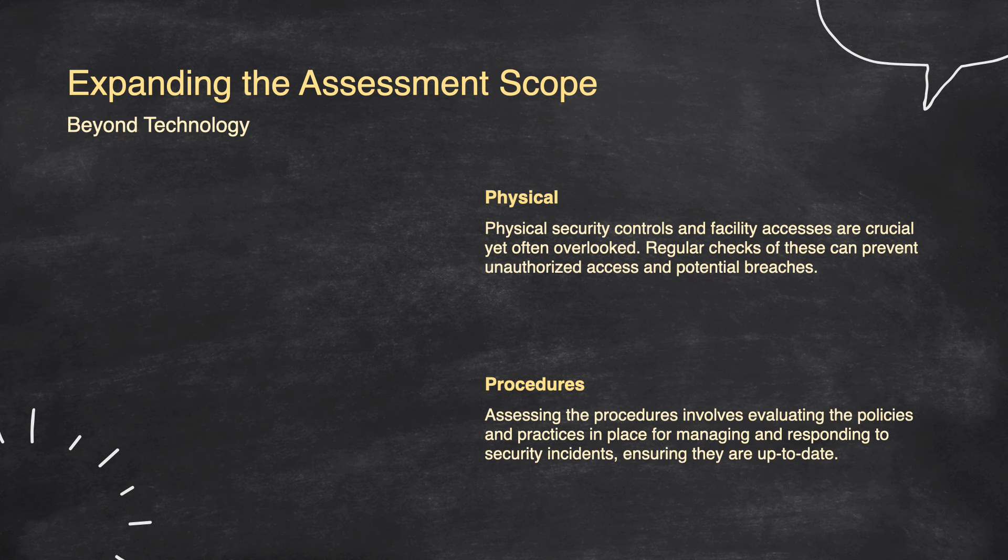Evaluating procedures means looking at the rules and practices used to handle security issues. This involves checking if your policies and response plans are current and effective. Regularly reviewing these procedures ensures they are ready to handle any security incidents that might come up. This way, one can ensure that the response is quick and effective when something goes wrong, and that you are always following best practices to keep everything secure.